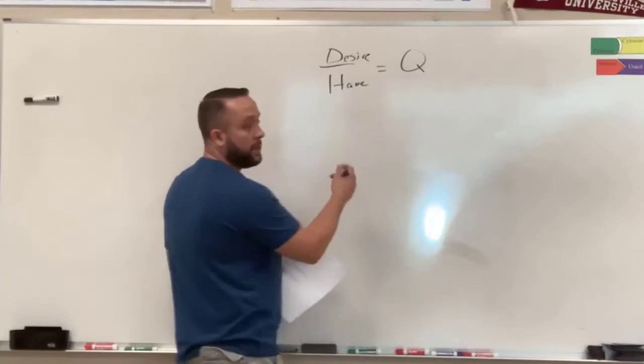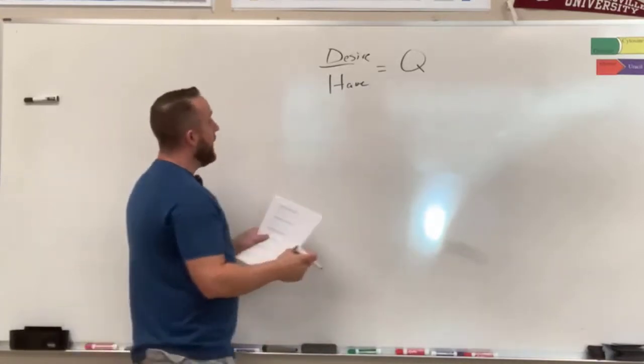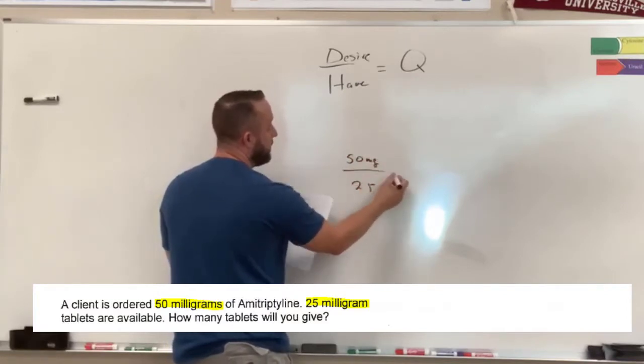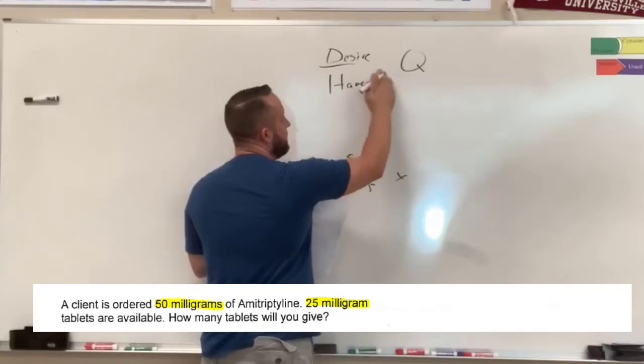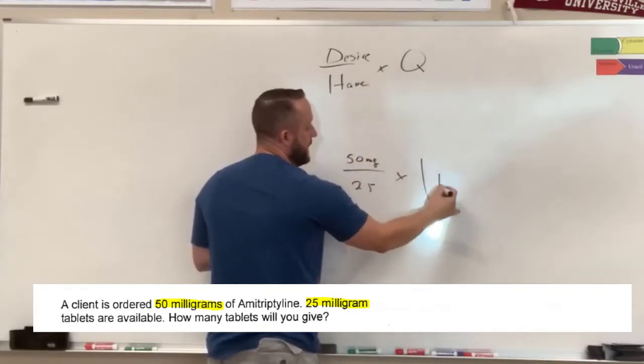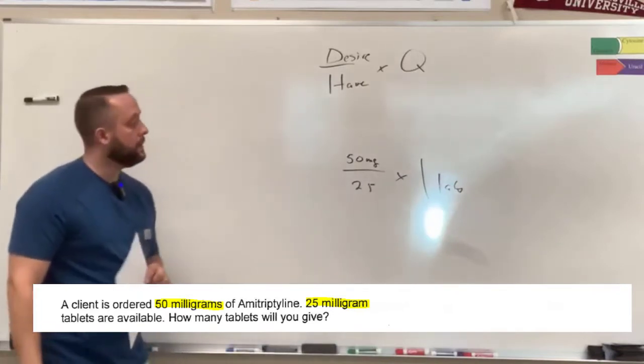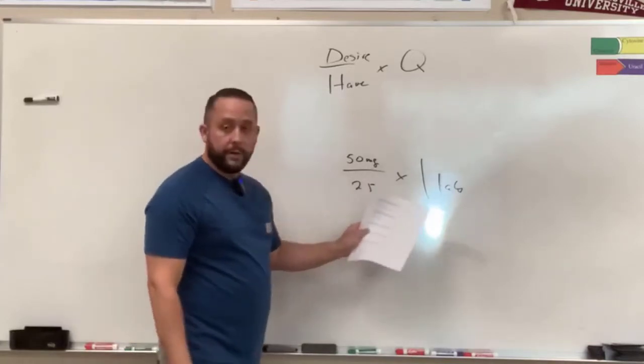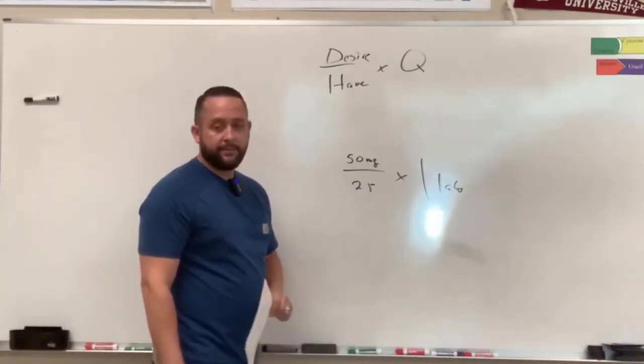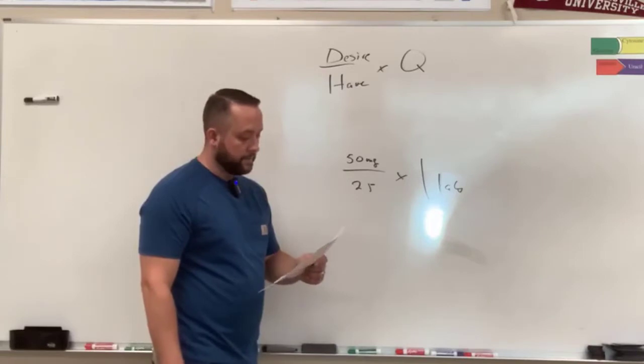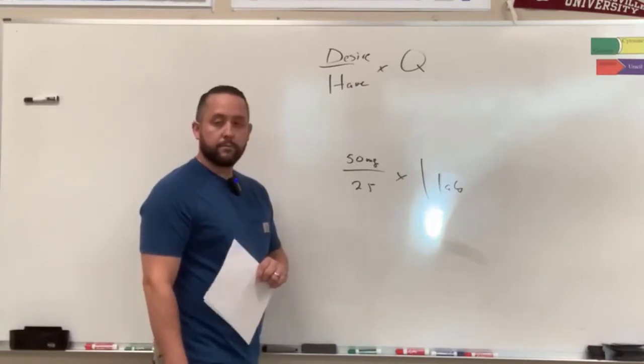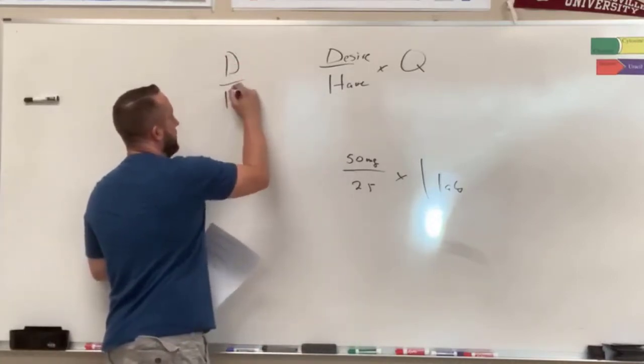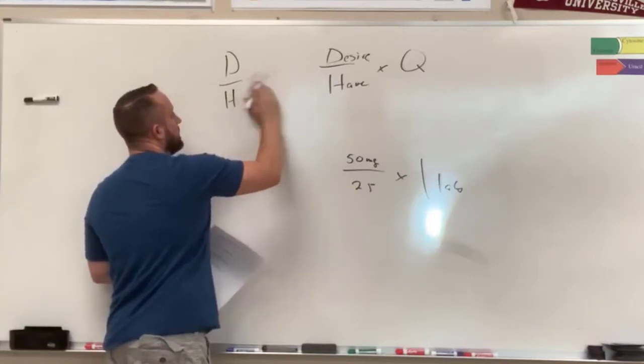If I'm going to plug in the numbers from this first problem, I desire 50 milligrams, but I only have 25, and it comes in one tablet. So if you divide 50 by 25 you get 2, and 2 times 1 is 2 tablets. So I would write this formula up here, and it looks like this in shorthand: D over H times Q.